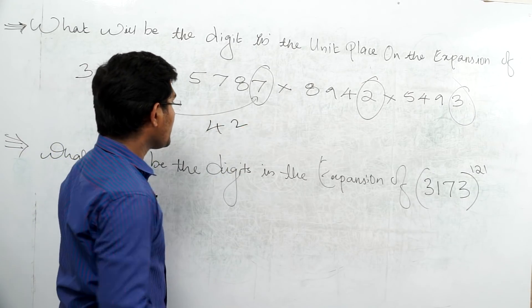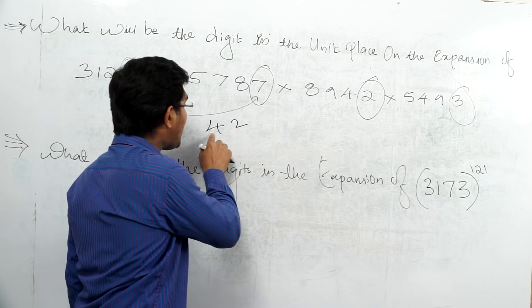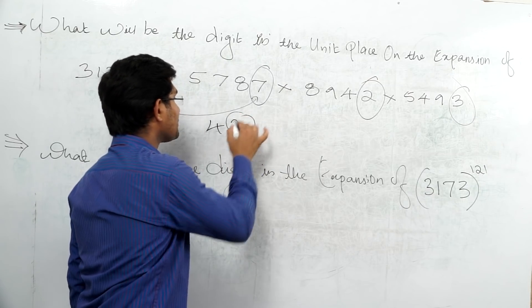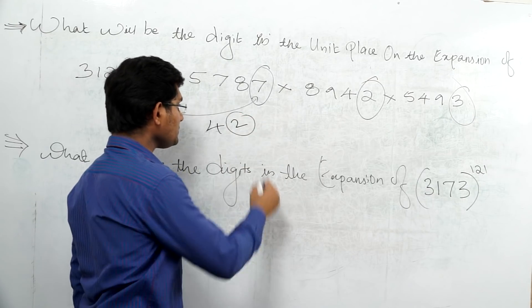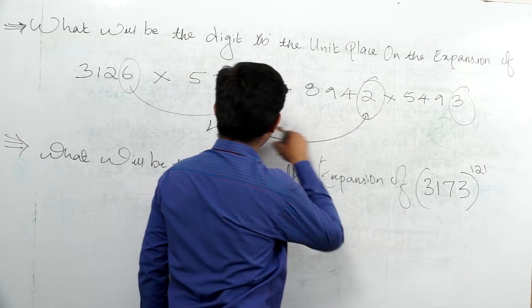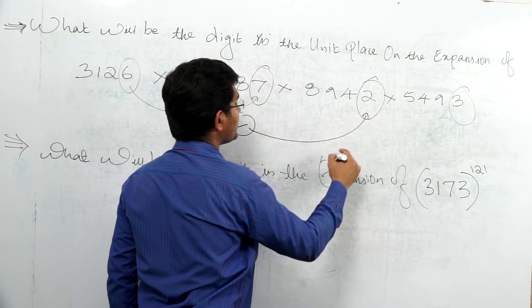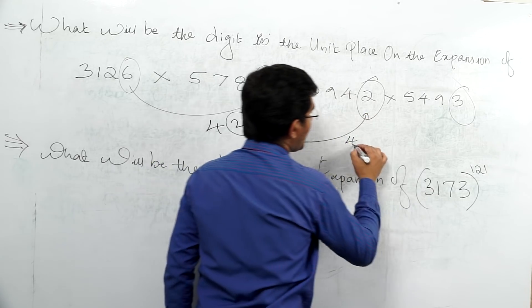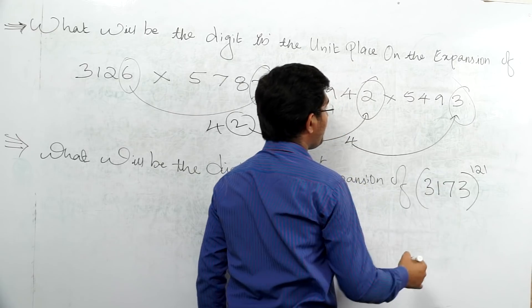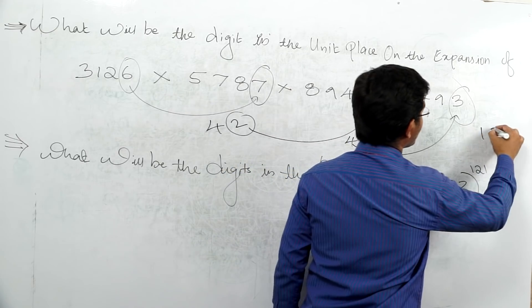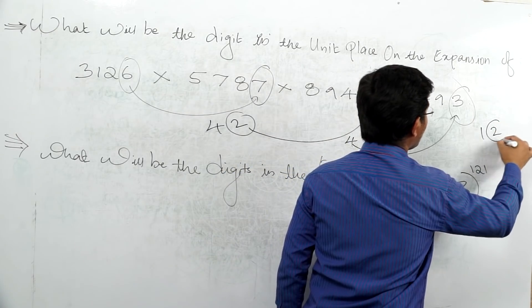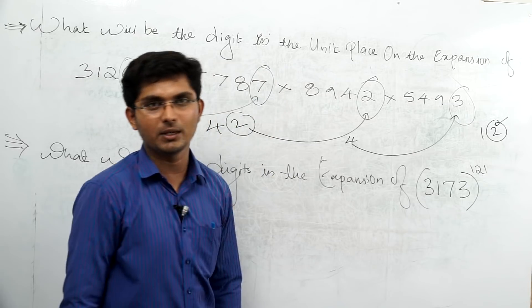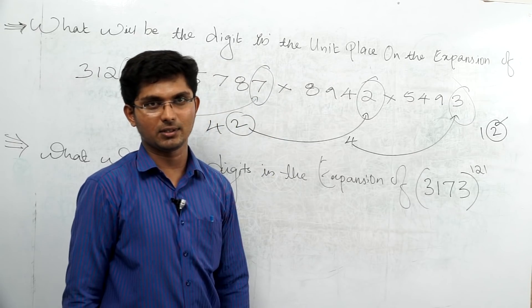Now we multiply the unit digits together: 6 × 7 = 42, then 2 × 3 = 6. So the unit digit of the product is 2. That is the answer.